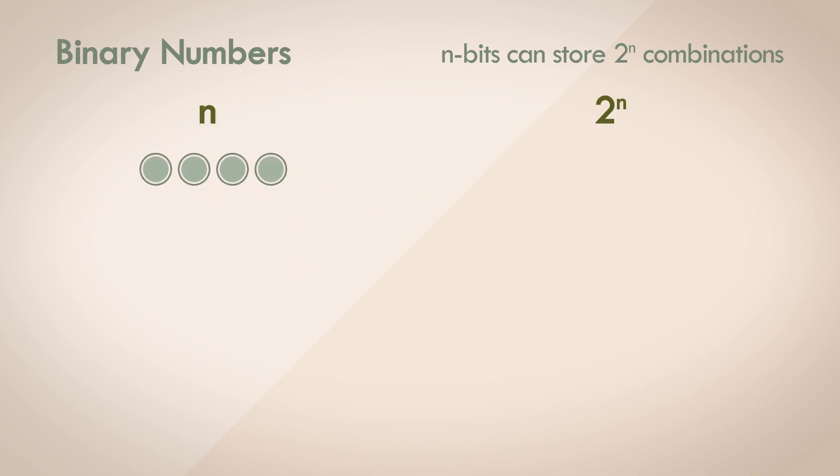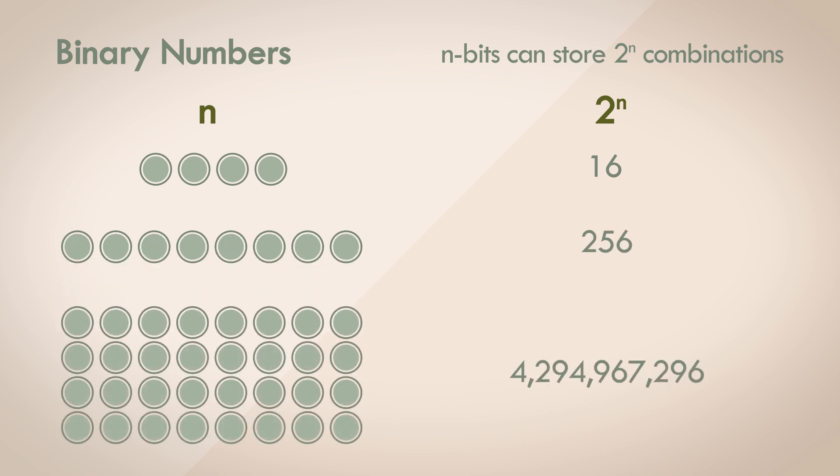So 4 bits can store 16 different possible values, 8 bits can store 256 distinct values, 32 bits can store a whopping 4.3 billion unique state values. So you can see an exponential growth on the order of 2.